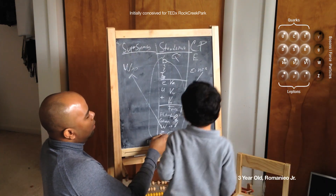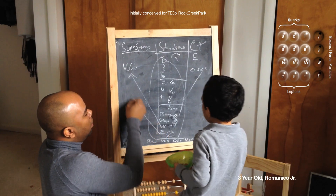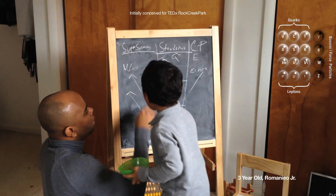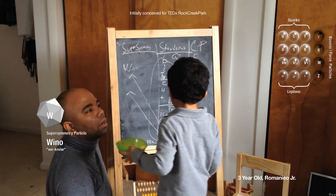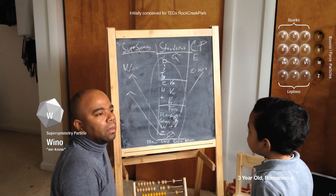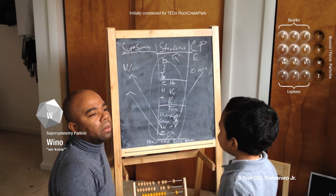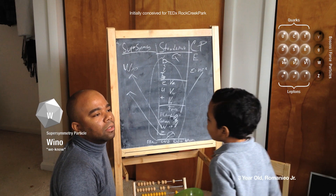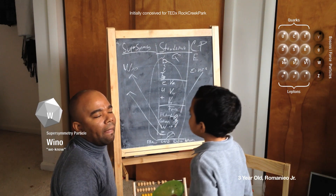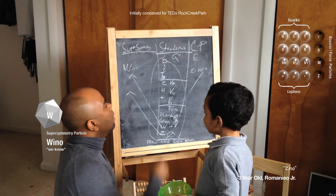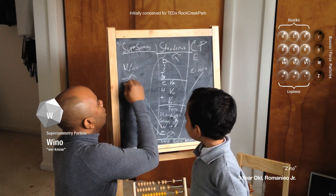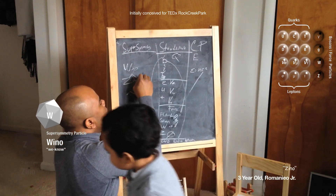We have the Z boson, but in supersymmetry we have what are called — what is the Z boson in supersymmetry? The Zino.